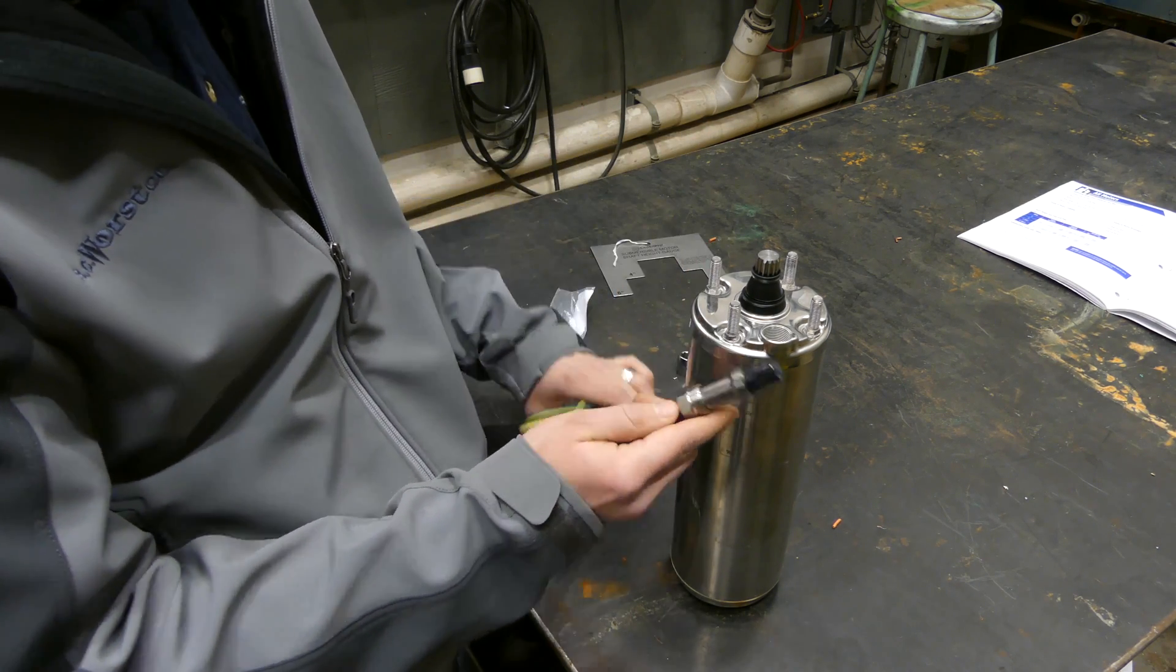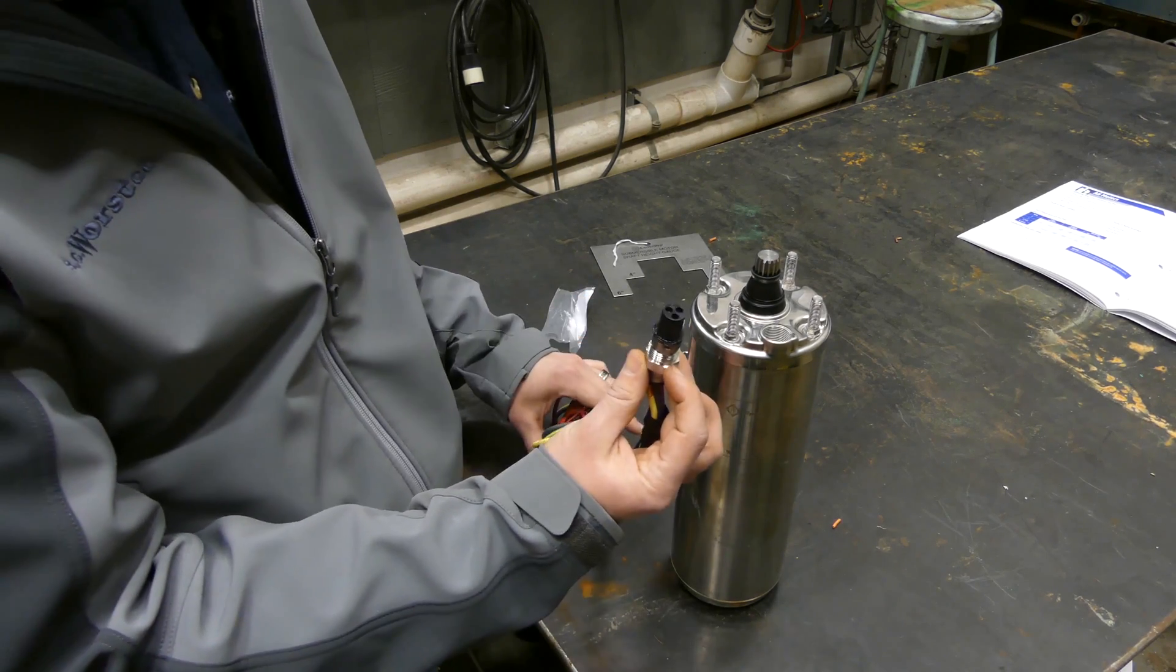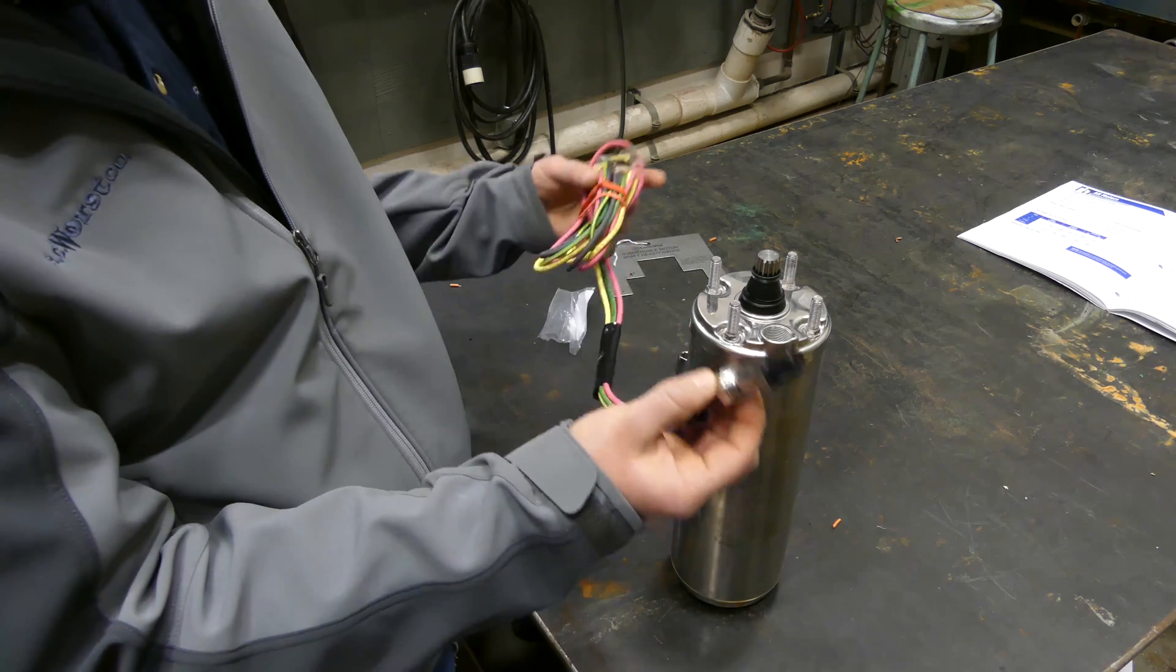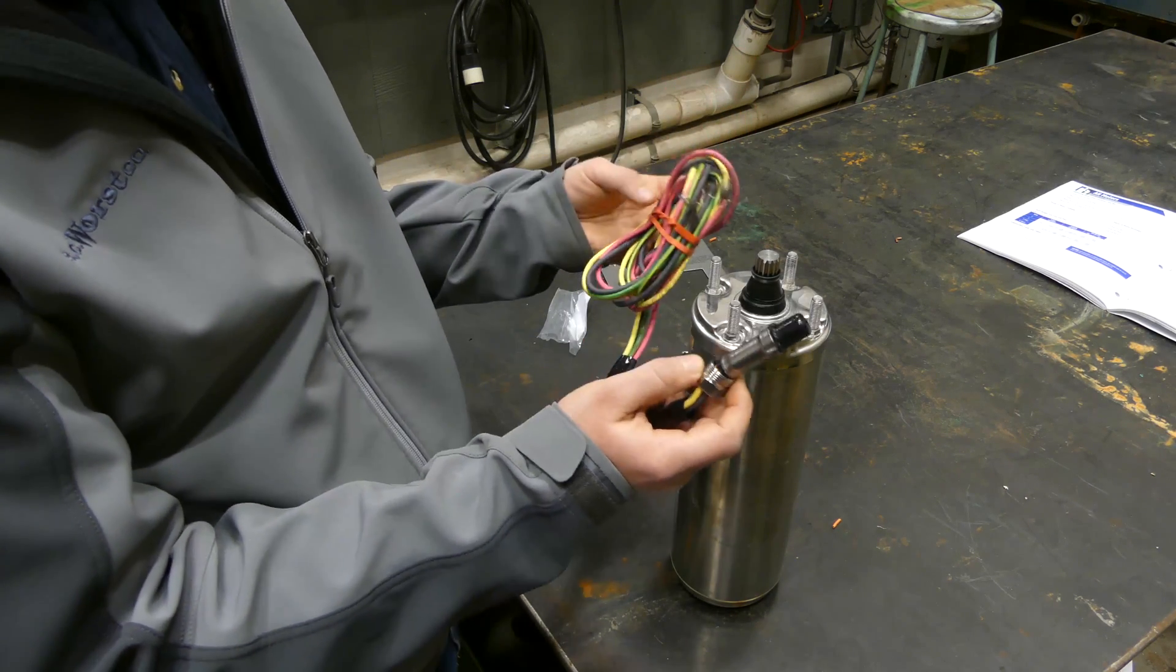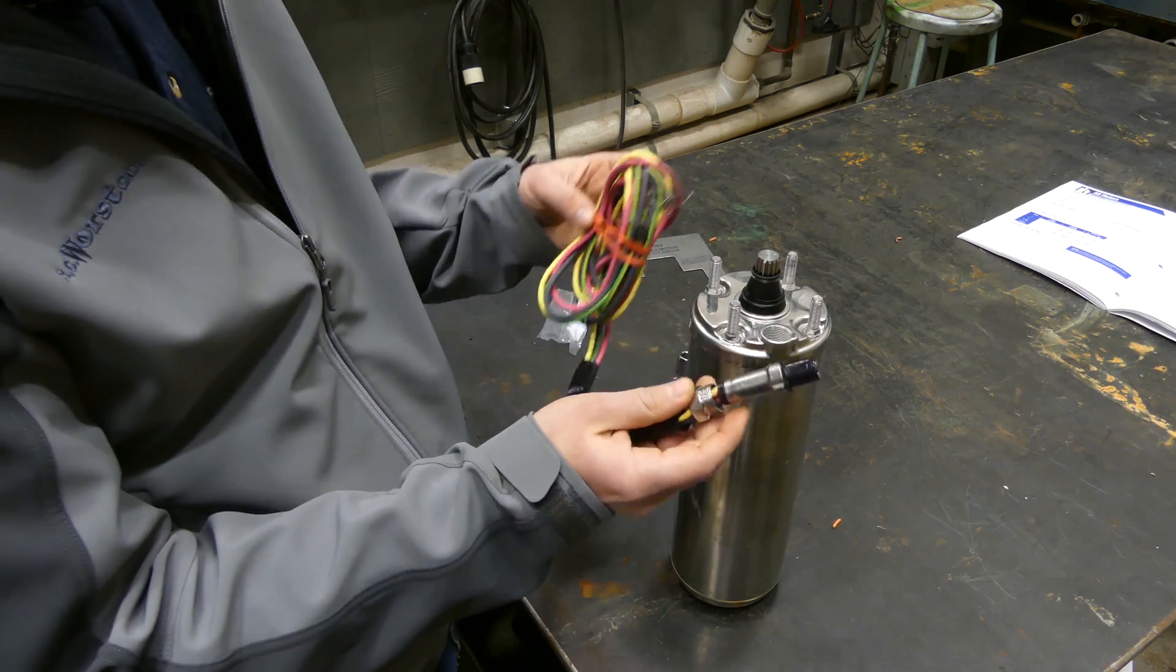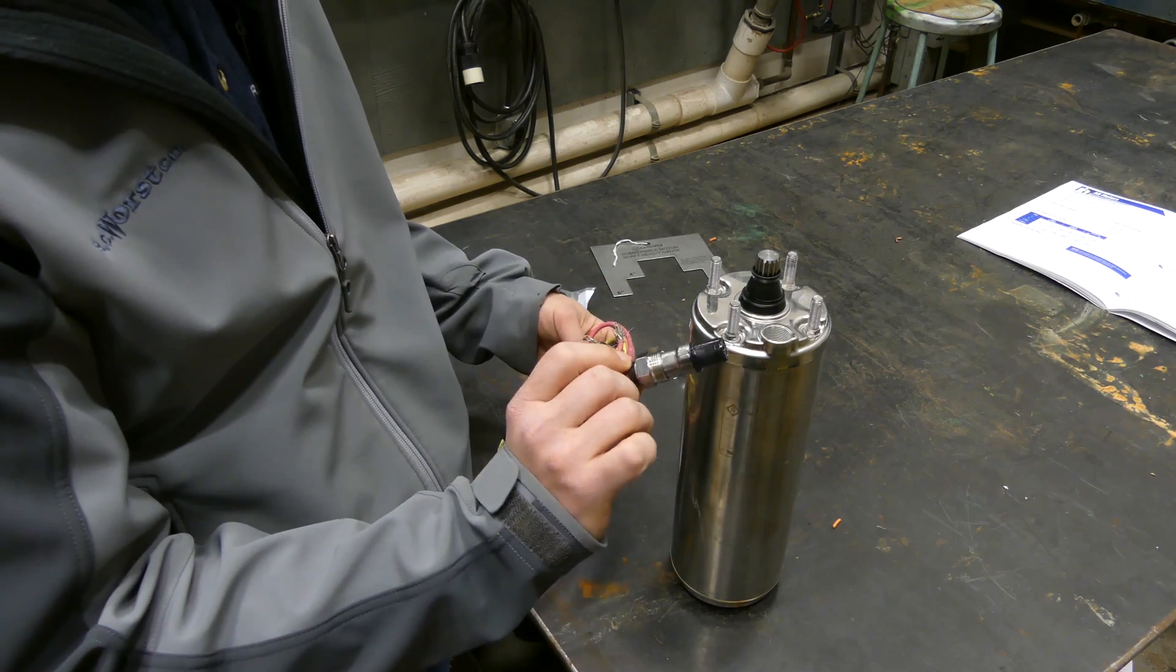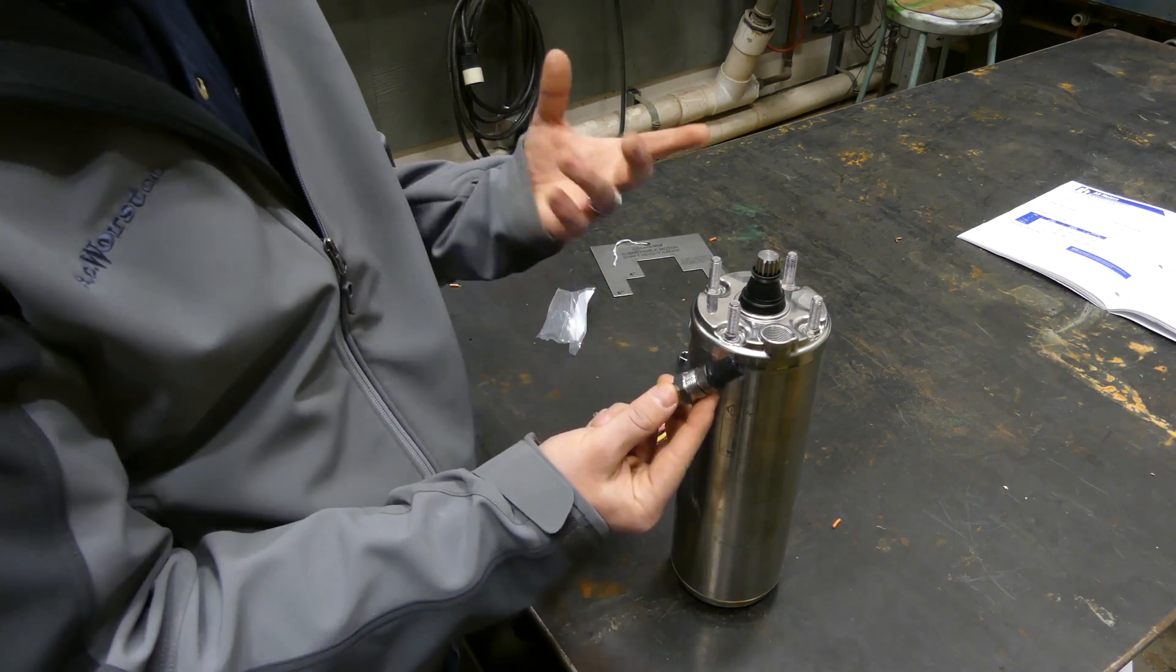Dielectric grease is a good thing for that because it's not going to allow any arcing or sparking to go on. So that's just a factory recommendation. If you have an older lead somewhere that you're using, make sure to throw some of that on there. I think it's available at most auto parts stores.